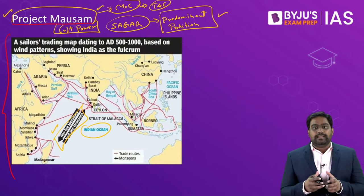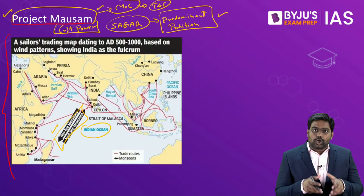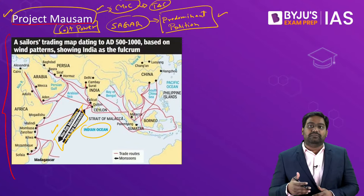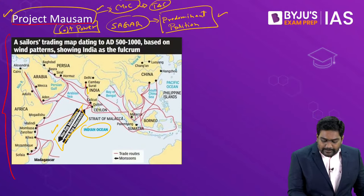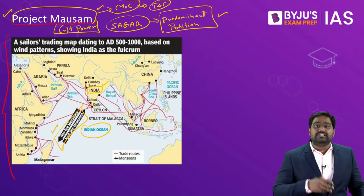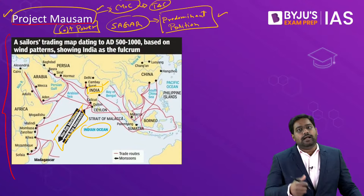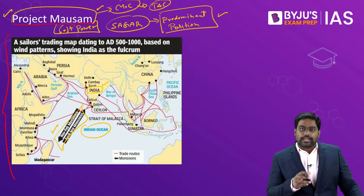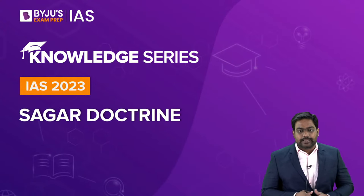The core idea is to help India become the dominant power of the Indian Ocean, counter all external powers like China and even the US, and ensure that India guarantees the security — both maritime and economic — of all the countries in the region. On this note, I would like to conclude this discussion on the SAGAR doctrine, and let's take some questions.